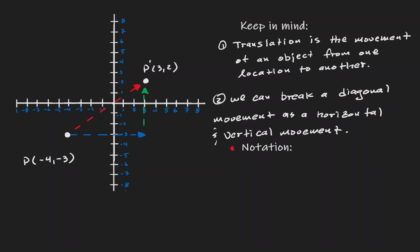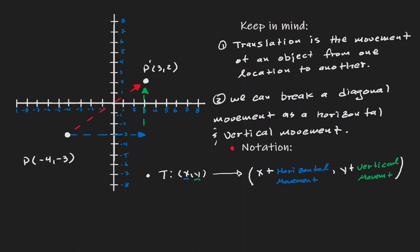So now let's talk about the notation that we'll be using. For translation, we can use capital T. For the pre-image, we always have a coordinate point. And then on the image, in the x component, we have to state the horizontal movement — so we're always going to represent it as x plus the horizontal movement. And for y, we have to represent the vertical movement, so the image can be displayed as y plus the vertical movement. We can rewrite this as x plus or minus a, where a represents the horizontal movement, and y plus or minus b, where b is the vertical movement.